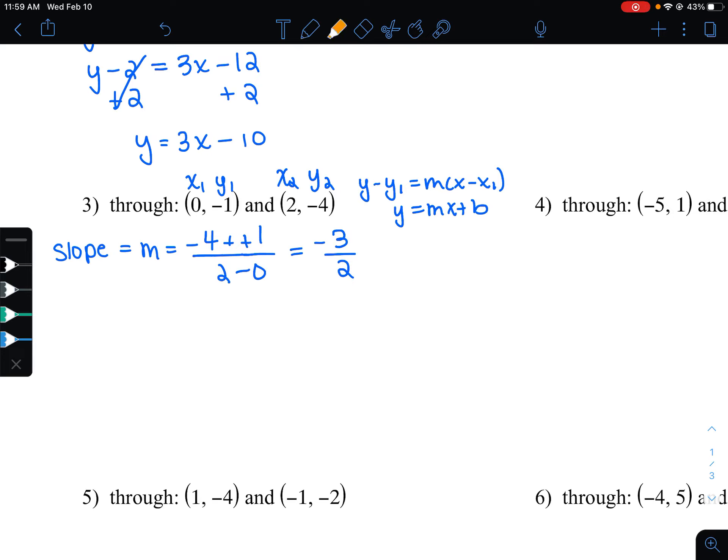Then we're going to go ahead and write our equation in point-slope form. I'm going to use the first point. You can use either one, but since the first one has a 0 in it, that'll be easier for me to work with. So we start in point-slope form. y minus y1, which is negative 1. So subtracting a negative would turn it into a positive 1. Equals our slope, which is negative 3 over 2, x minus x1, which is 0.